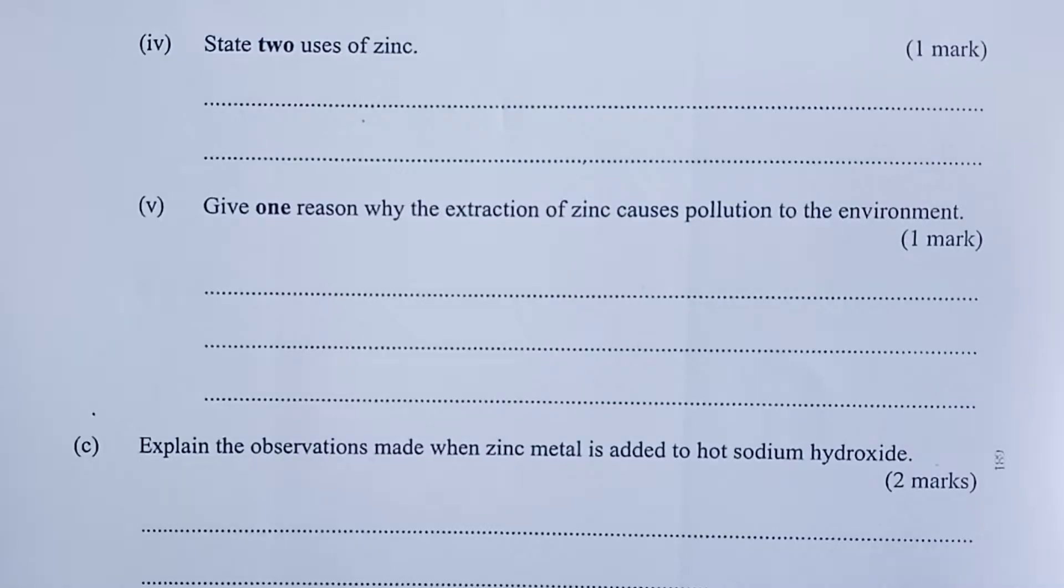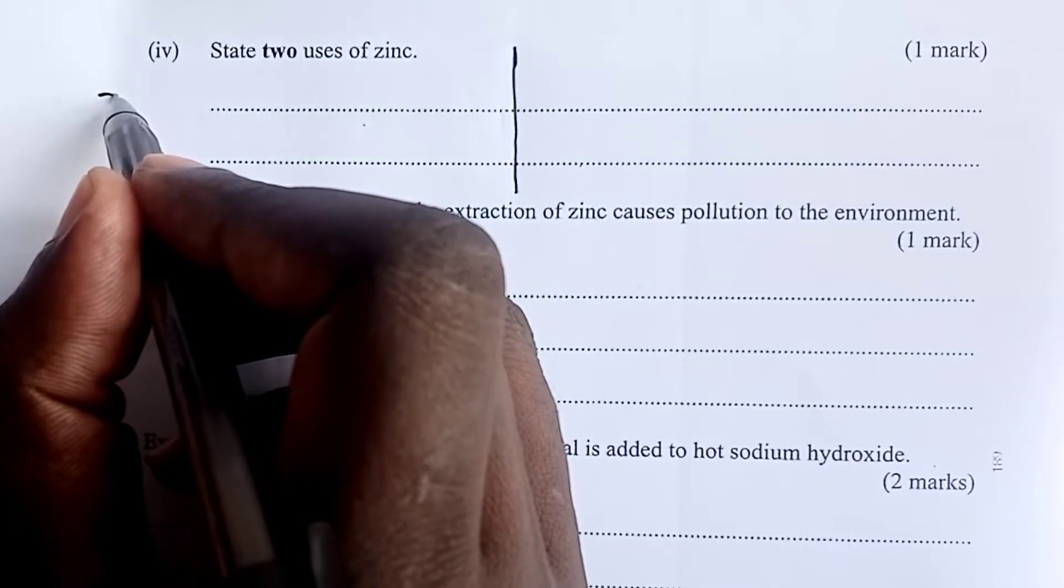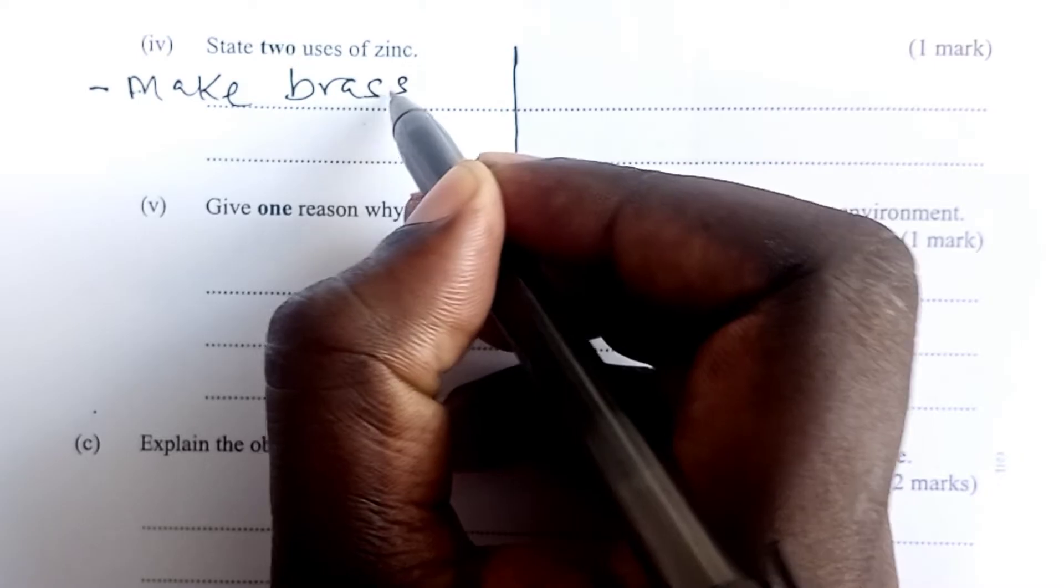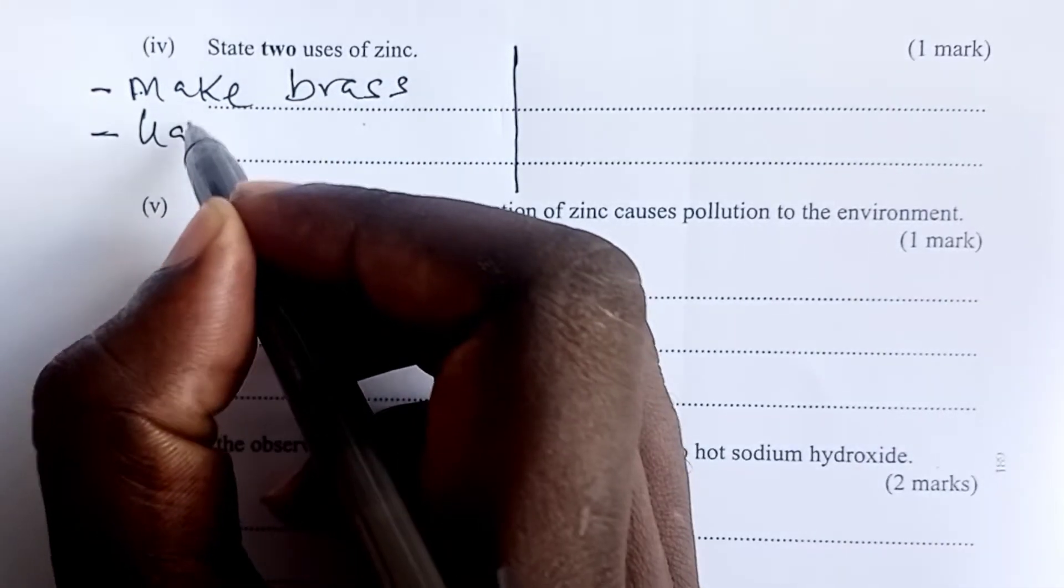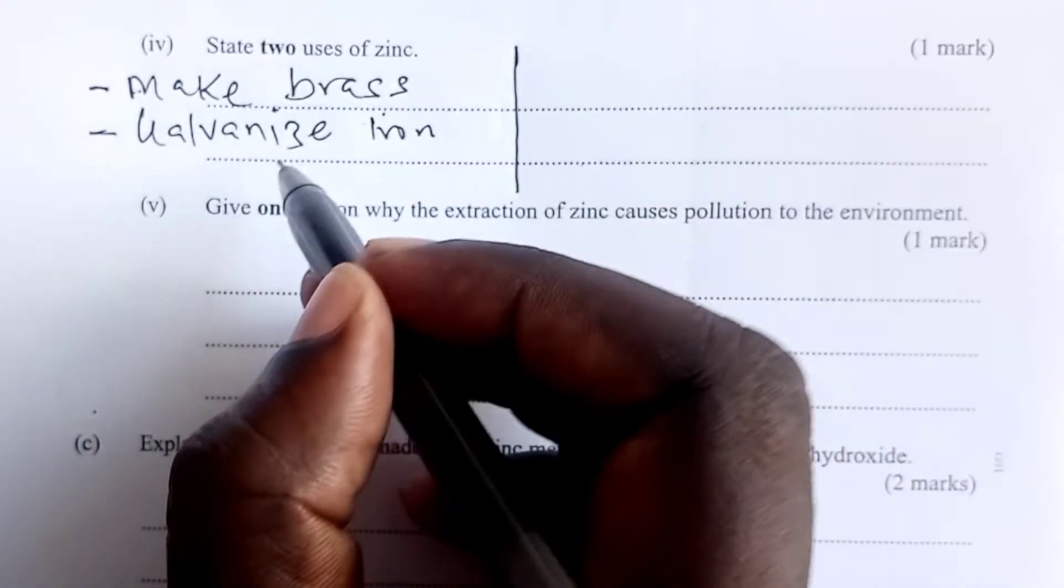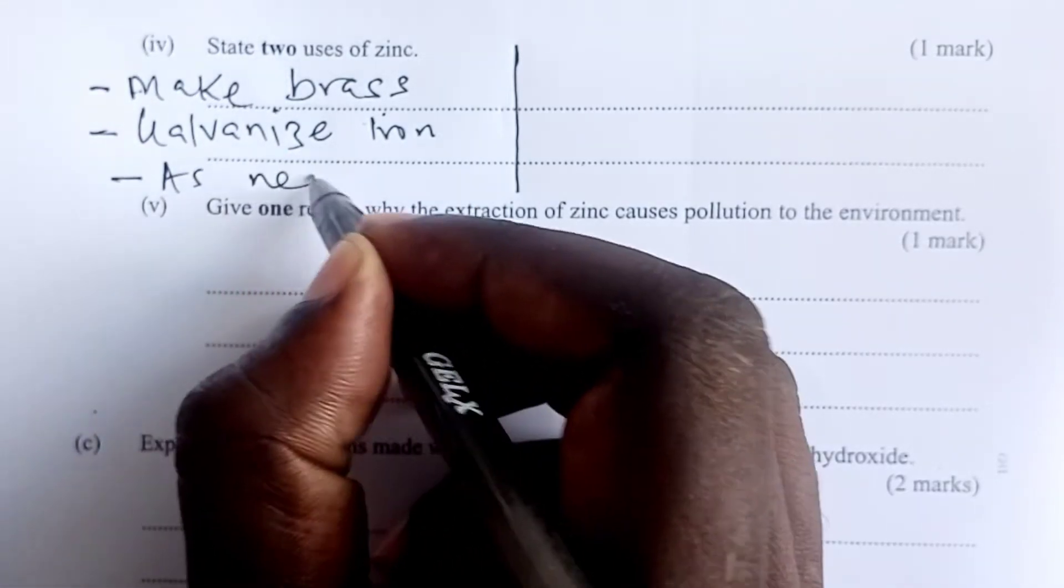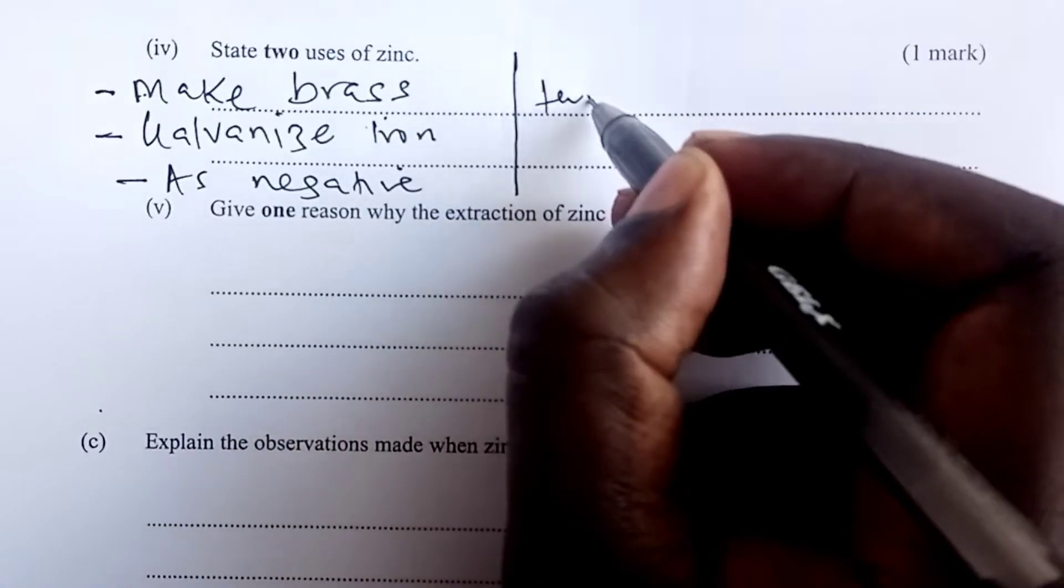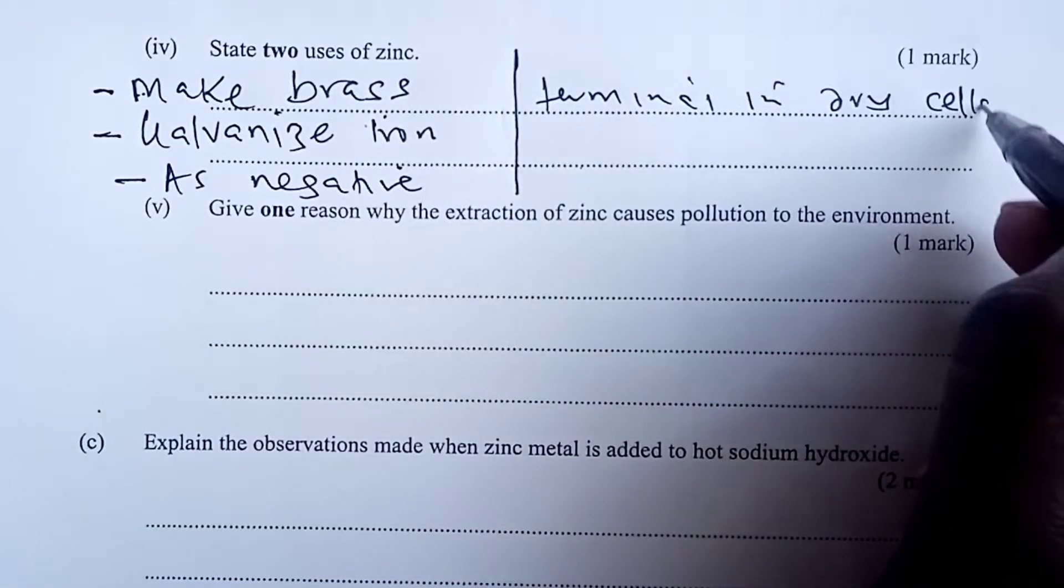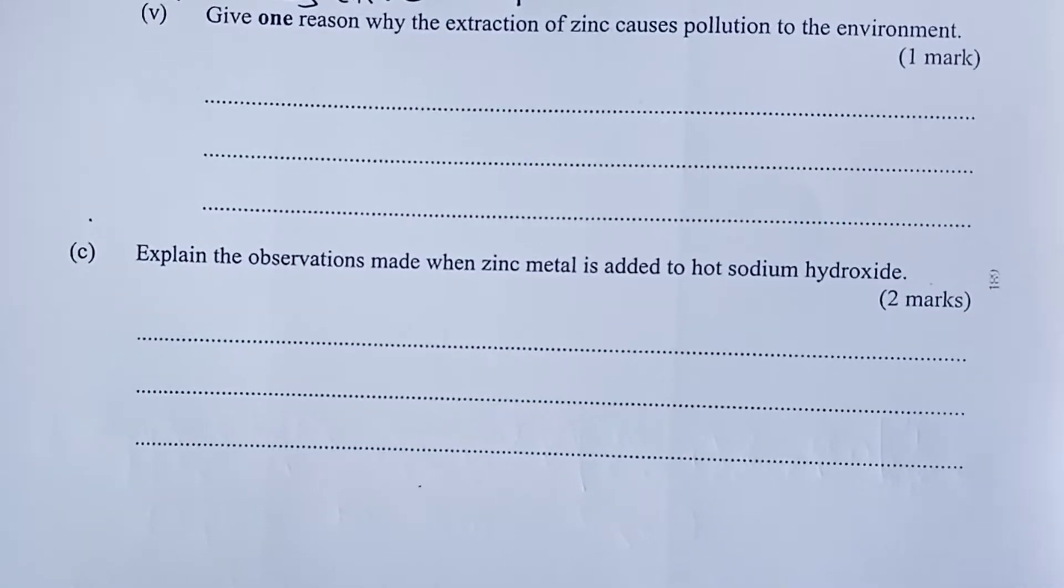The question is asking us to state only two uses of zinc. Zinc has quite a number of uses. One is to make the alloy brass. Two, we can use zinc to galvanize iron. And I believe you know what galvanization means. We also use zinc as negative terminal in dry cells. So you pick any among the three that we have given.